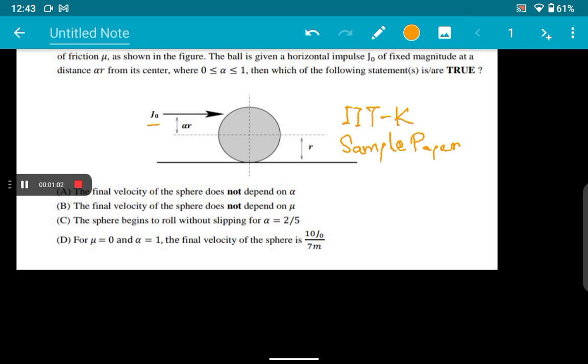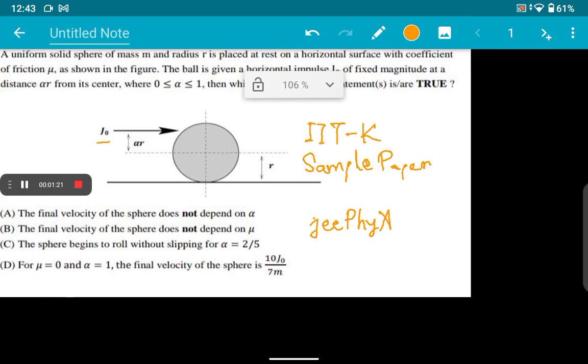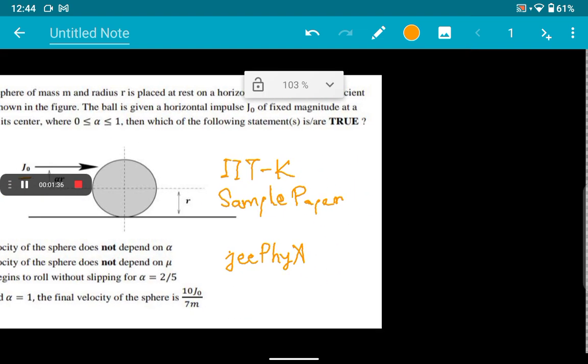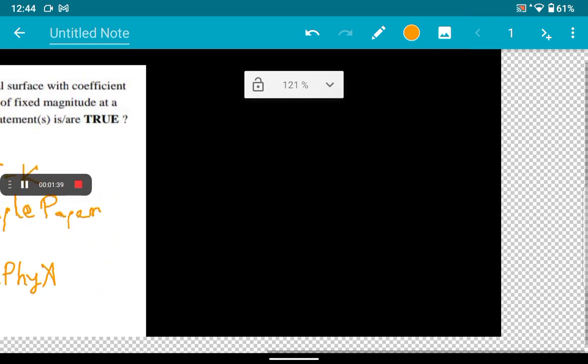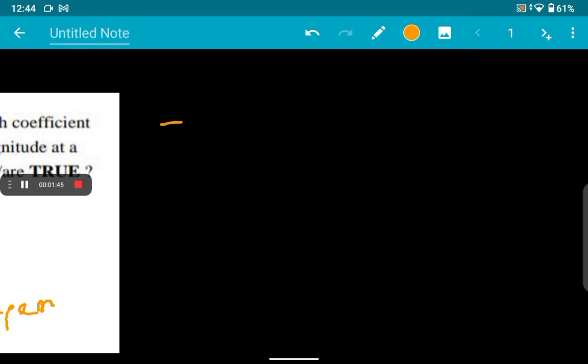We are given four options and this is actually a multiple correct question. I am really thankful to the channel J Physics, so let me just write the name here so you guys can check out his channel too. We have to choose whichever options are correct in this question. Let's get going. This question is pretty simple, we just have to apply one thing: the definition of impulse.